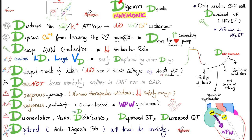Now the digoxin mnemonic: digoxin, digitalis, digitoxin — all have the D. The mechanism of action: I destroy the sodium-potassium ATPase, the secondary exchanger won't work, calcium is deprived of its ability to leave the cardiac myocyte, staying inside and boosting cardiac contractility. I also delay conduction in the AV node, slowing the heart rate and decreasing the ventricular rate. Be very careful in Wolff-Parkinson-White syndrome — by slowing the normal path even more, you're left only with the crazy fast accessory pathway.